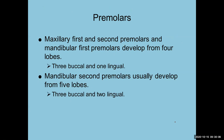All premolars — maxillary first and second, mandibular first and second — can develop from four lobes. Like anterior teeth, three buccal lobes form the buccal cusp and one lingual lobe forms the lingual cusp. The mandibular second premolar is a variation that usually develops from five lobes — three on the buccal and two on the lingual. This is why we no longer use the term 'bicuspid'; premolars can have two or three cusps.